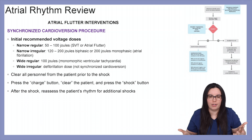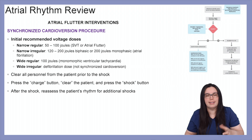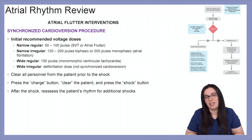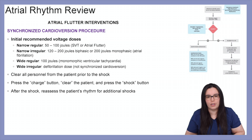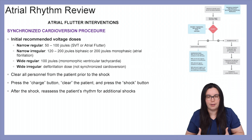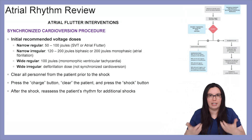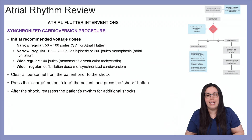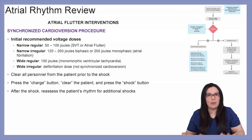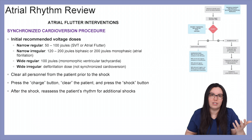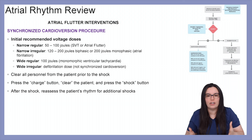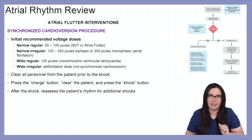For voltage dosages: the initial recommended dose for narrow regular rhythms is 50 to 100 joules for SVT or atrial flutter. Narrow irregular rhythms are 120 to 200 joules with a biphasic defibrillator or 200 joules for a monophasic defibrillator — seen most with atrial fibrillation. Wide regular rhythms use 100 joules for monomorphic ventricular tachycardia. Wide irregular rhythms use defibrillation doses, not synchronized cardioversion.